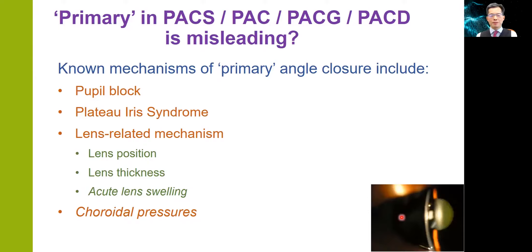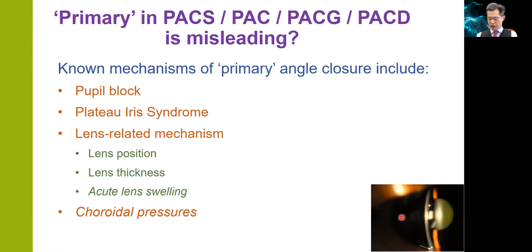The word 'primary' in primary angle closure disease can be misleading because this word usually implies that there are no unknown underlying causes or mechanisms leading to the disease. But in primary angle closure disease, there are actually at least several known mechanisms, and these include pupil block, plateau iris syndrome, lens-related mechanisms, and also possibly choroidal pressures. The lens-related mechanism may include the anterior-posterior position of the lens, the thickness of the lens, as well as acute lens swelling.